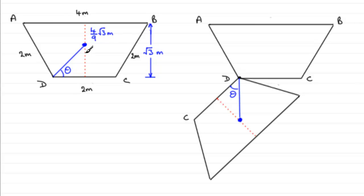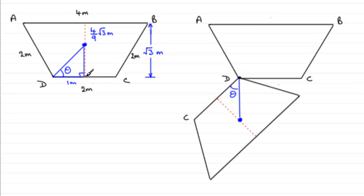To work this angle out we can consider this right-angle triangle. We know this distance is 1 meter. We also know that the distance between the two parallel sides AB and DC, found in the previous part, was root 3 meters. So this distance has got to be root 3 minus 4/9 root 3, which leaves us with 5/9 root 3 meters.